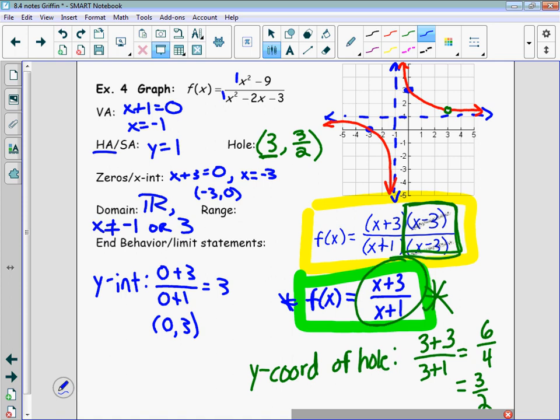The range, you'll have to be aware of that in terms of a hole as well. This graph does not cross the horizontal asymptote, so that will be something else we take into account. But this will be all reals, y cannot be... Looks like if it doesn't cross the horizontal asymptote, it won't be what? 1. And then, it will also not be 3 over 2.